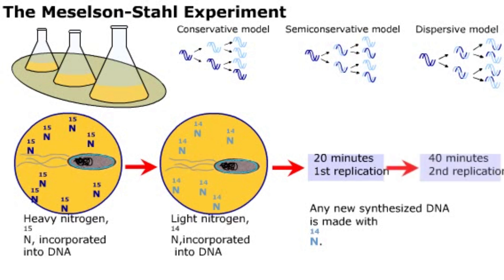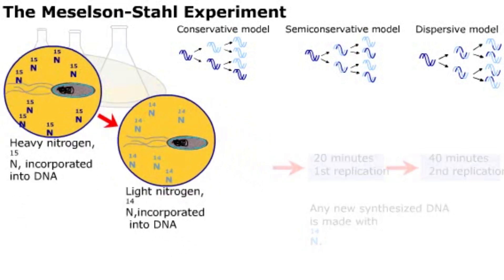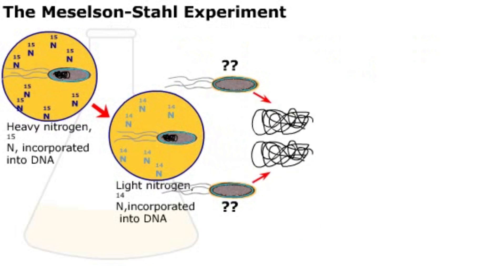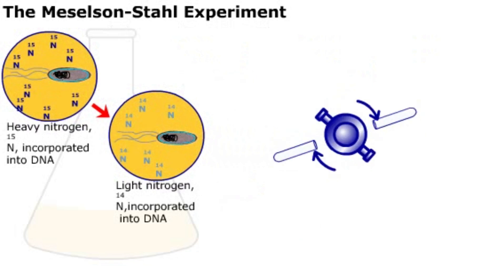After 40 minutes, the second round of replication was complete. To determine which nitrogen isotopes each double-stranded DNA molecule contained, they extracted the DNA from the bacteria and separated the DNA molecules by density.